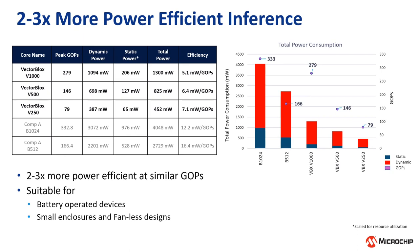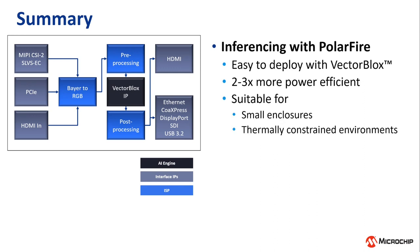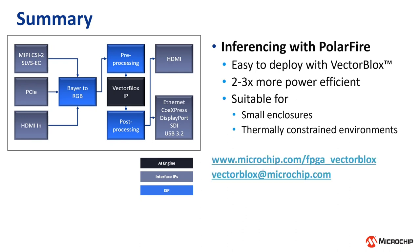The PolarFire enables two to three times more power-efficient inferencing for similar performance output compared to other mid-range FPGAs in the market. This makes the VectorBlocks solution on PolarFire FPGAs suitable for applications requiring low power consumption and small enclosures. VectorBlocks enables easy development with machine learning algorithms through a software abstraction over the traditional FPGA design flow, while utilizing PolarFire's low-power fabric for thermally constrained environments. Visit our website for more information, and feel free to ask any questions or stop by our booth.